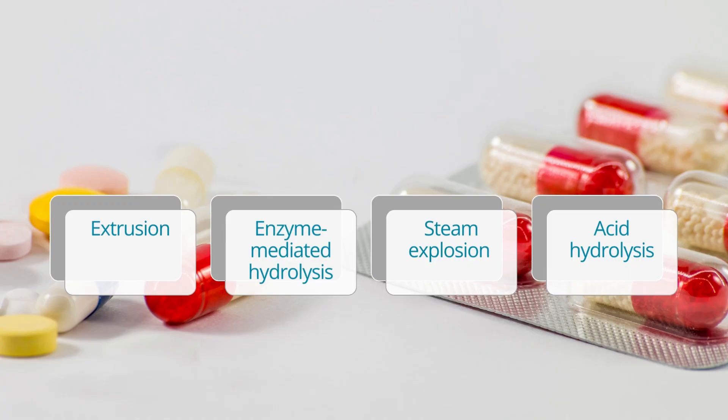The process for extracting the MCC from the pulp or lint can involve any one of the following methods: extrusion, enzyme-mediated hydrolysis, steam explosion, and acid hydrolysis.